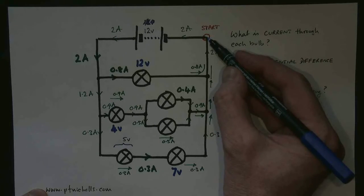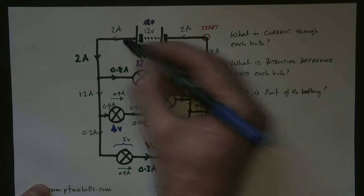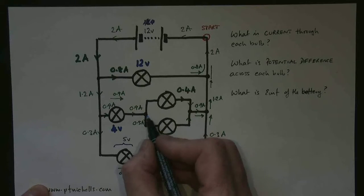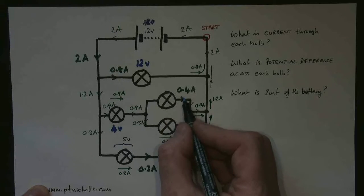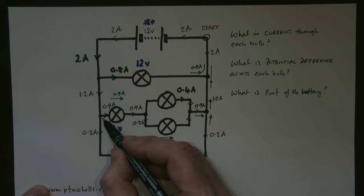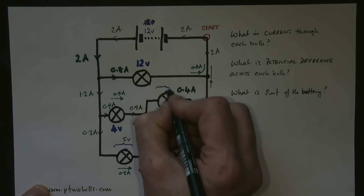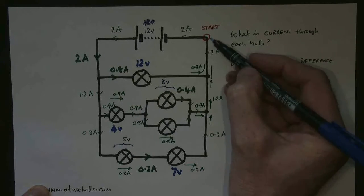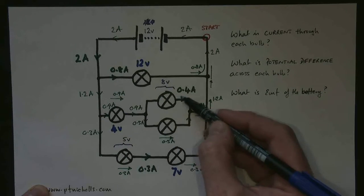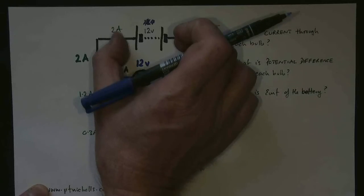Now let's try the middle journey. We start from here, go along — 12 volts EMF — down here, 4 volts potential difference. We go through the top route: some potential difference we don't know, back to the start. So 12 must equal 4 plus something, meaning that something must equal 8 volts. Adding up: 12 must equal 4 plus 8, back to the start. That works. So those two add up to the 12 volts of the battery.